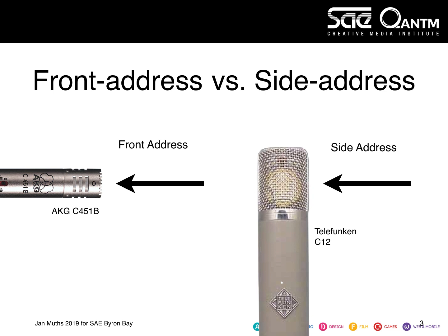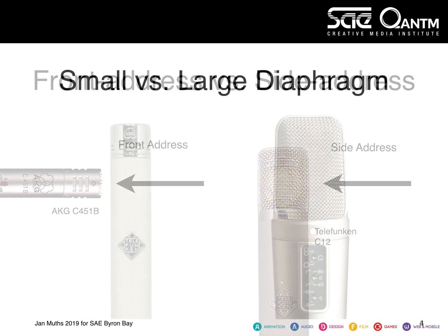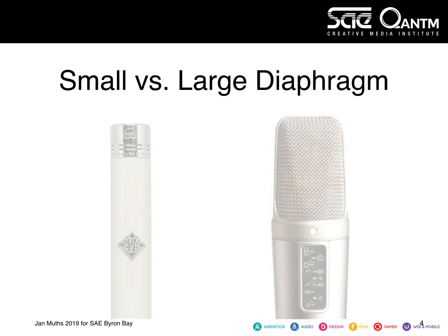Talking about large and small diaphragm condensers, there are generally two different types, and they have pros and cons. We talk about a small diaphragm condenser when the diaphragm is less than one inch in diameter, and a large diaphragm condenser when it's equal to or greater than one inch in diameter.